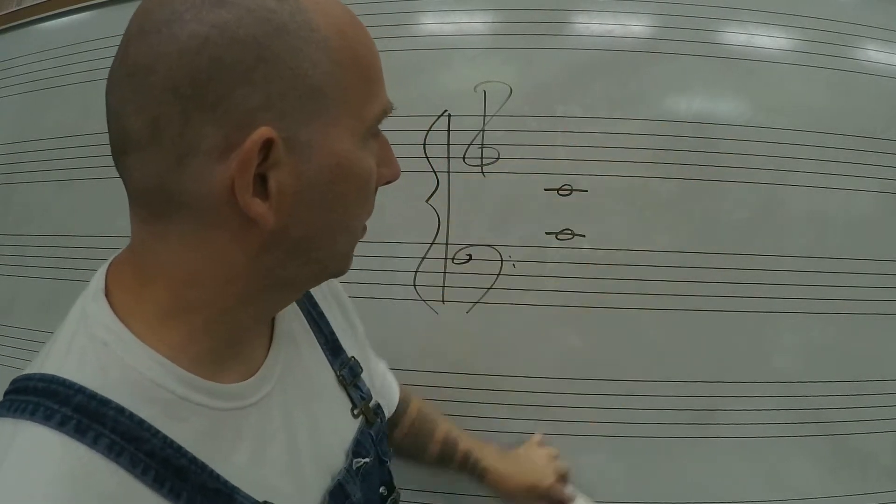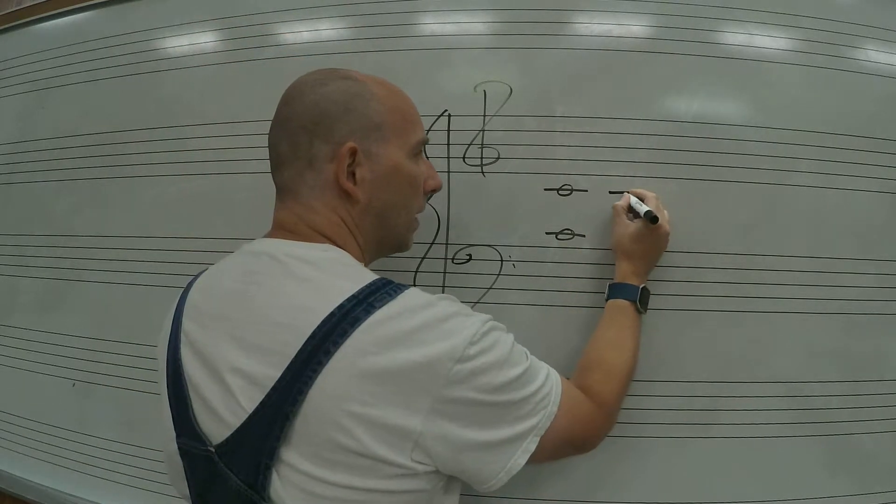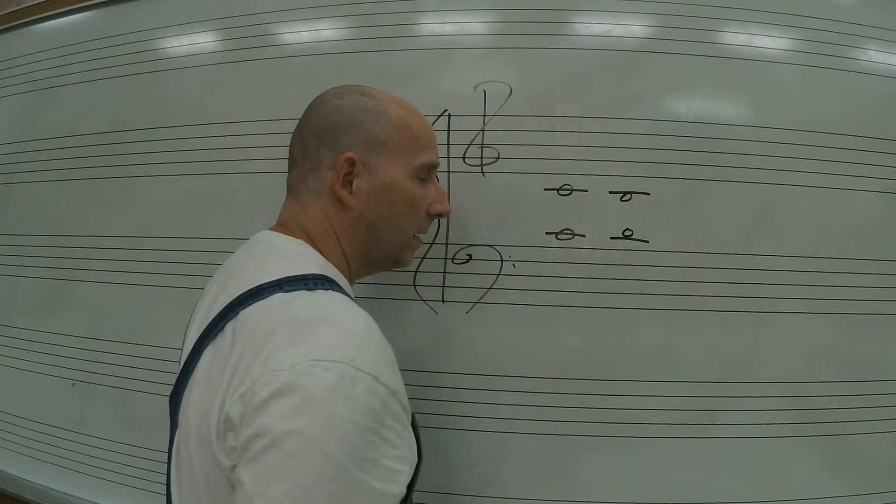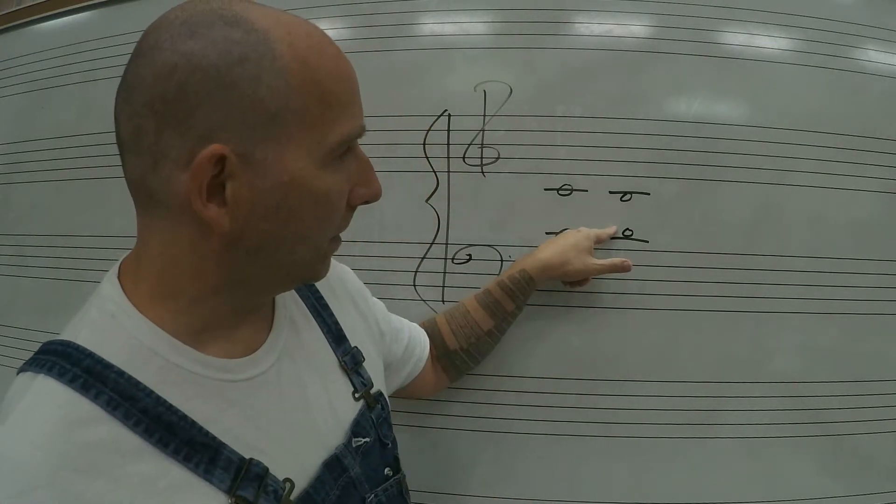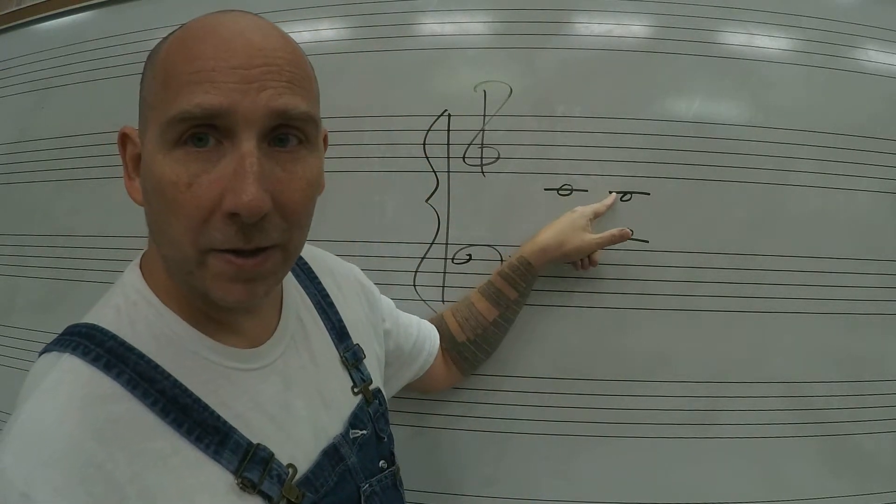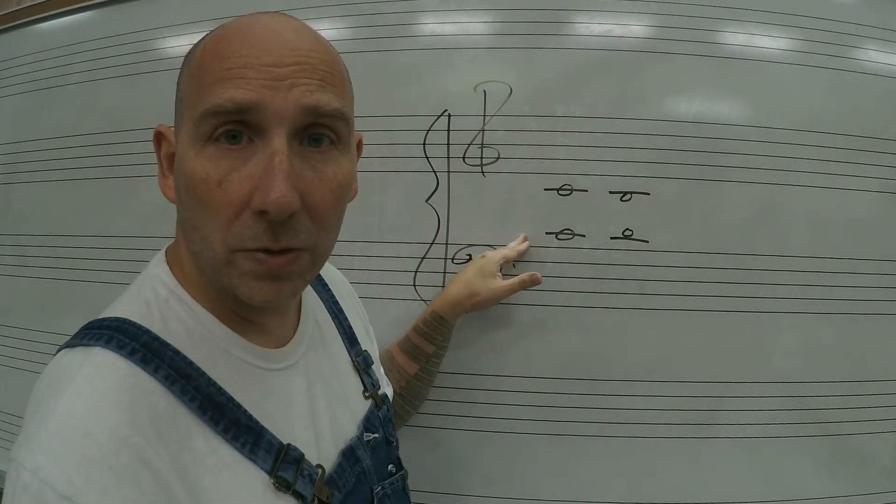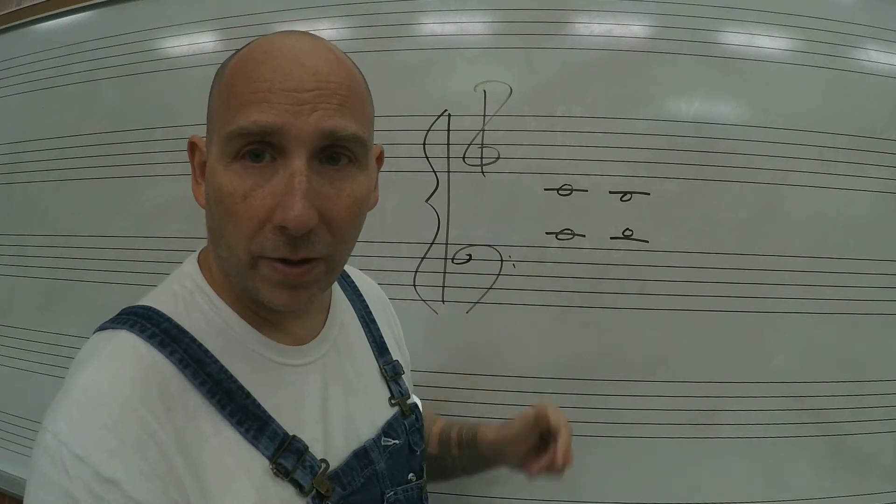The notes on each clef could cross over. So I could have a B on the treble clef and I could have a D on the bass clef, and this note is actually higher than this note. So you have to read carefully when you're reading ledger lines in between the two staves on the grand staff.